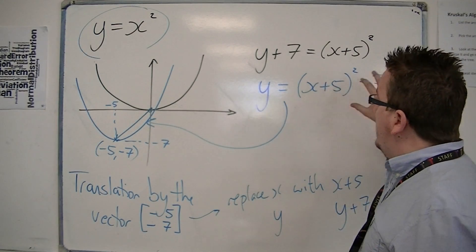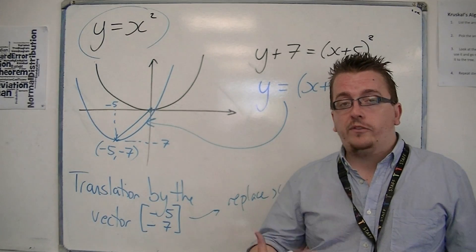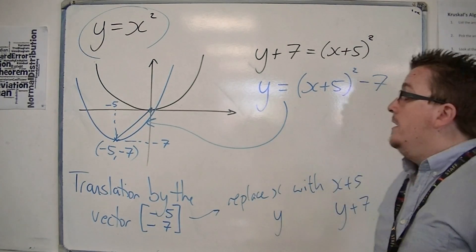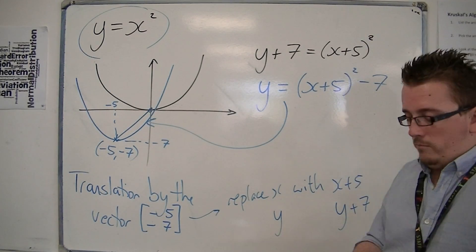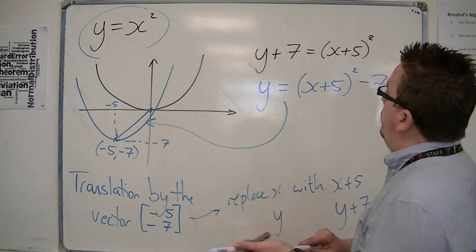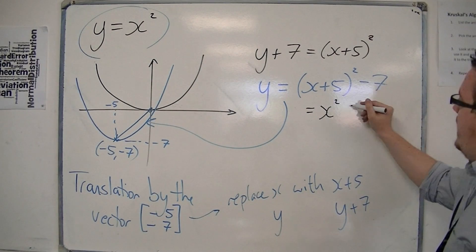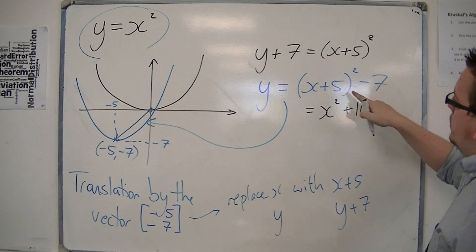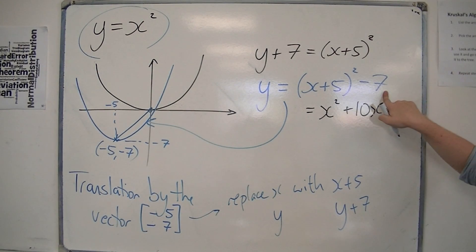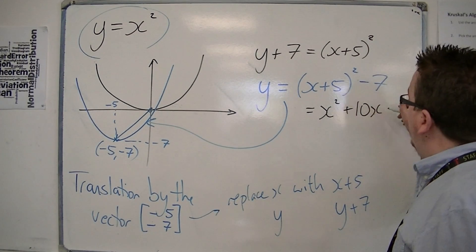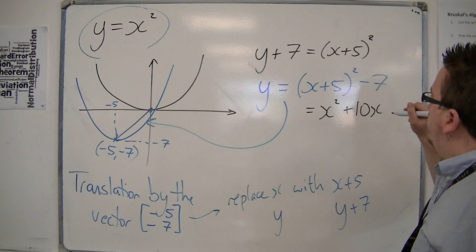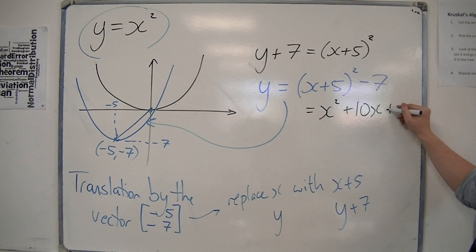And we can write it in this completed square form. You can also then multiply the brackets out so that you get x squared, you'll get 10x, and then you'll get 25 take away 7 is 18.